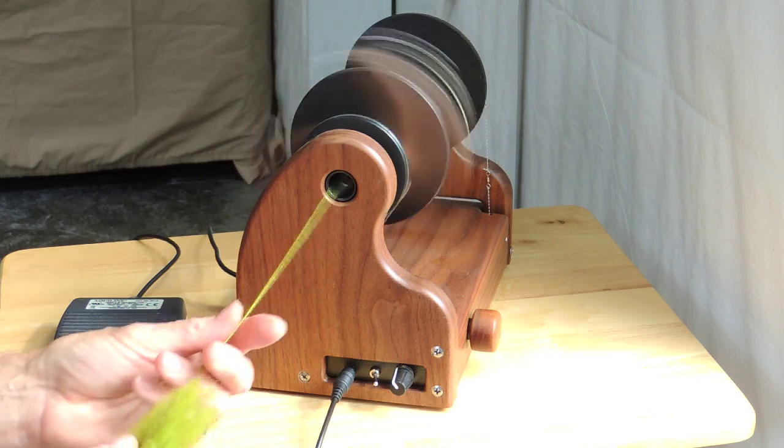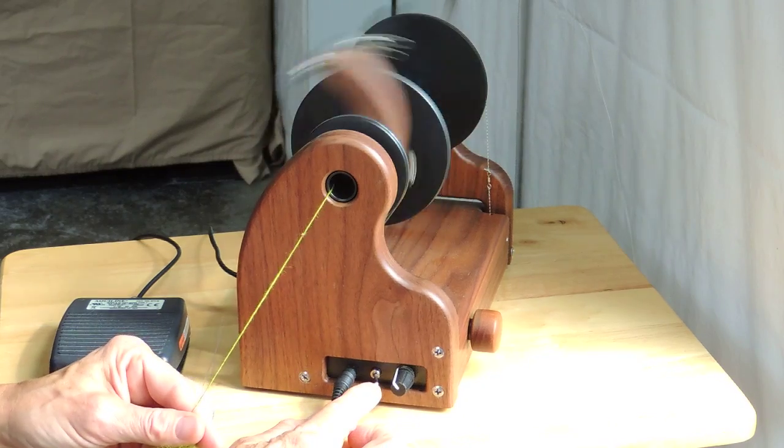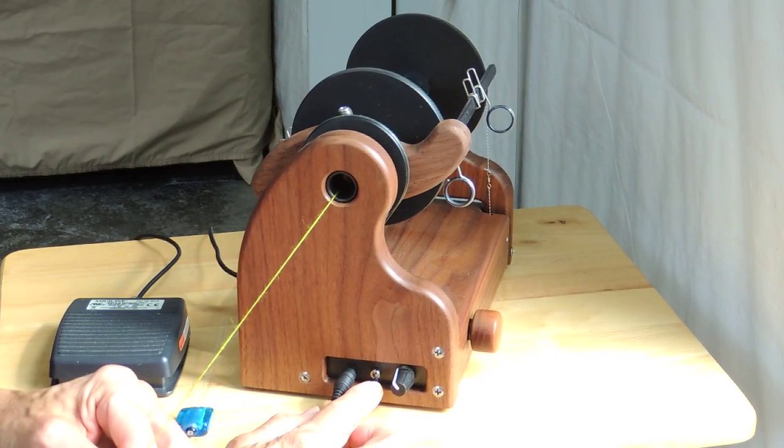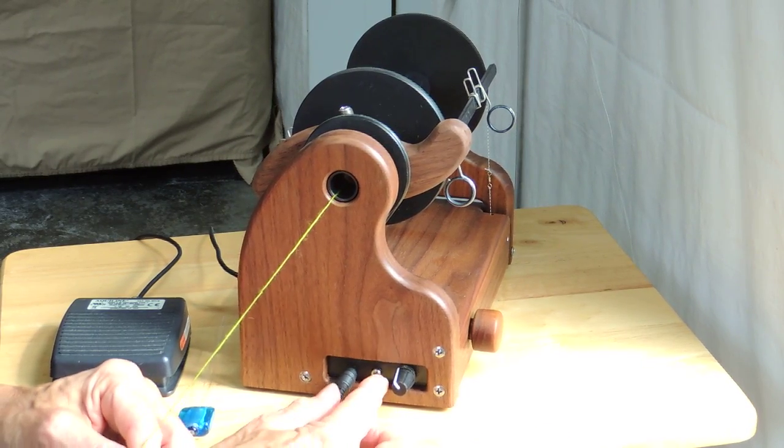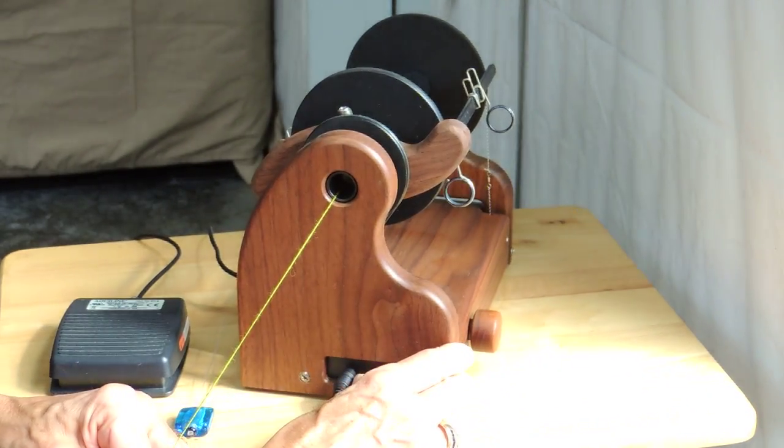Right now I'm in spin mode obviously and that's adjusted right here by this toggle switch. So to the right is clockwise spinning, in the center is off and to the left is counterclockwise for plying.